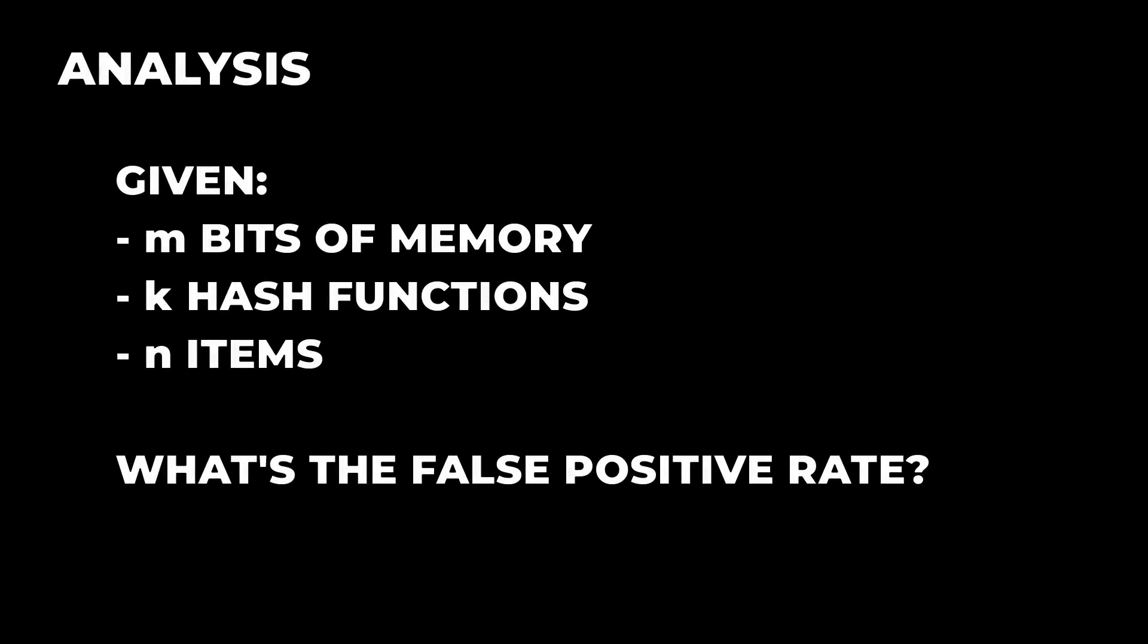If we use m bits of memory, k hash functions, and added n items, what's the chance of falsely identifying an element as in the set when actually it's not? In real life, it depends. Measure it. But we can get a good approximate answer if we assume the hash functions select bits uniformly and independently for distinct elements.